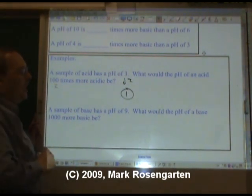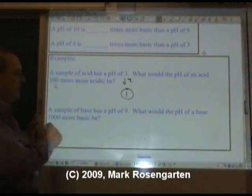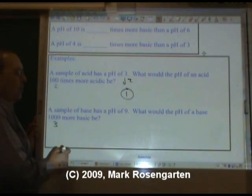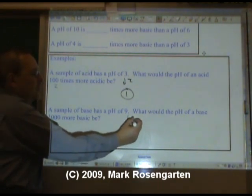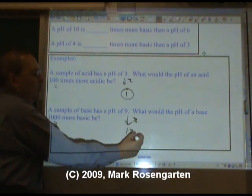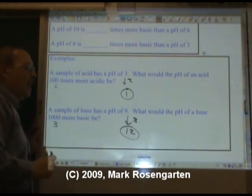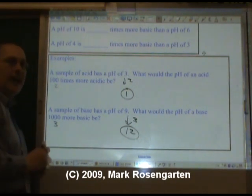Sample of base has a pH of 9. What would the pH of the base that's 1,000 times more basic be? 1,000 is 3 powers of 10. So we're going to raise this number by 3. A pH of 12 is 1,000 times more acidic than a pH of 9.